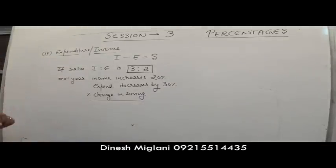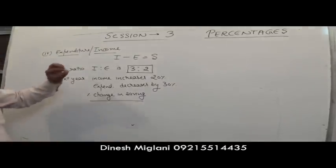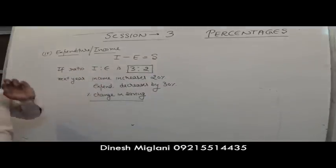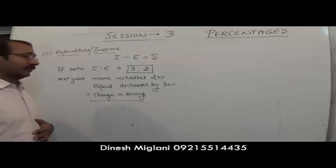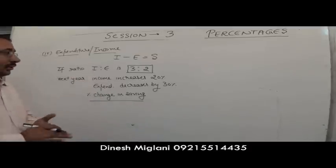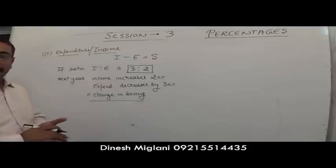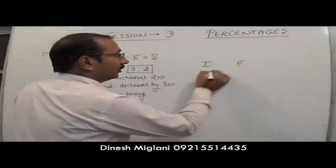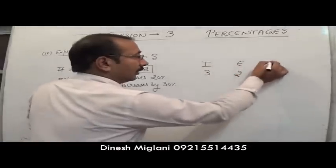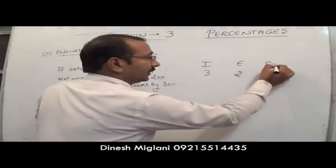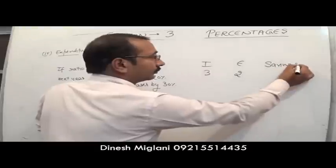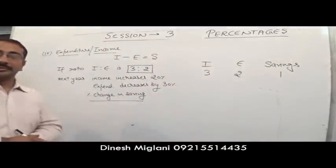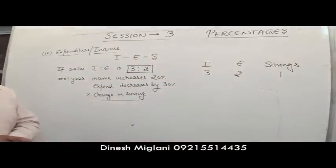Everywhere we are using percentages, no absolute value is involved. So we assume income = 3 and expenditure = 2, meaning savings = 1.